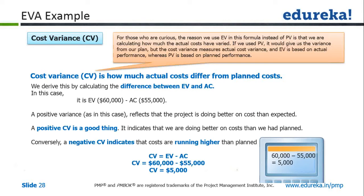We are going to calculate our cost variance. The cost variance formula is earned value minus actual cost. The earned value — the work we have done — is worth $60,000, and the actual money spent so far is $55,000. So earned value minus actual cost gives a positive value of $5,000. Any positive value with respect to cost variance is good — it means you are spending less than what you had planned for, which is definitely good news but a rare situation in real life.